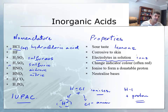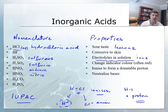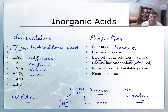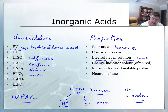Acids change colour in indicators. You've probably most commonly dealt with things like litmus, which is red, universal indicator, which is often a reddish-orange colour in acid solutions, and so on. But we'll look at a few more indicators and some different sorts of colours as we go through this unit.